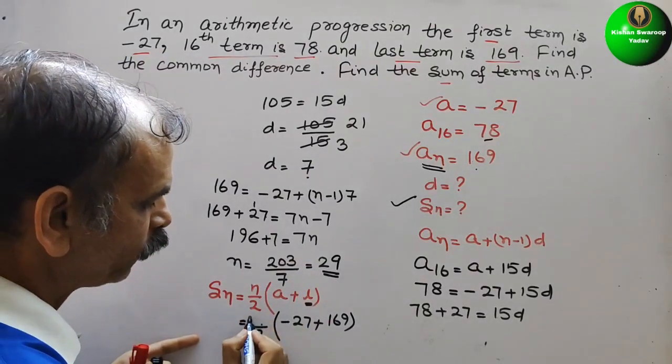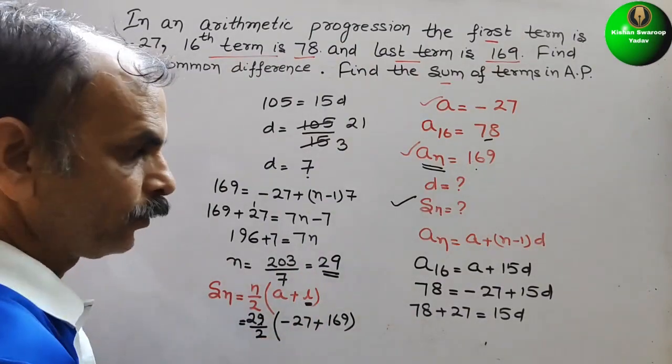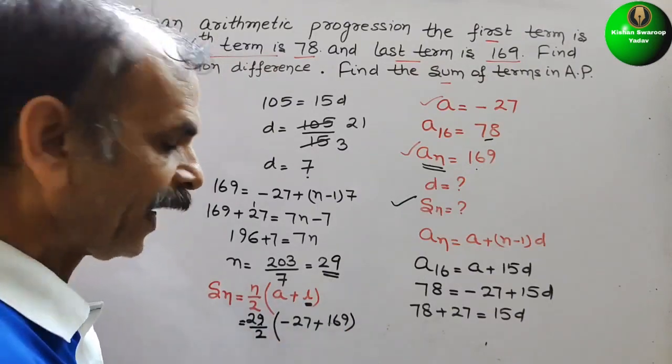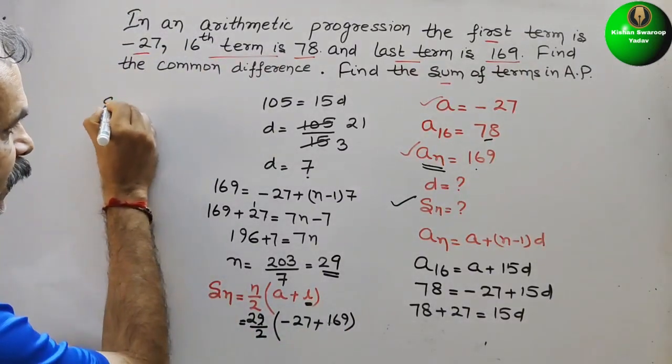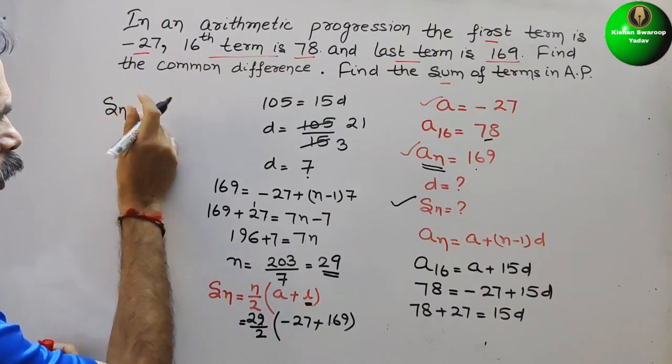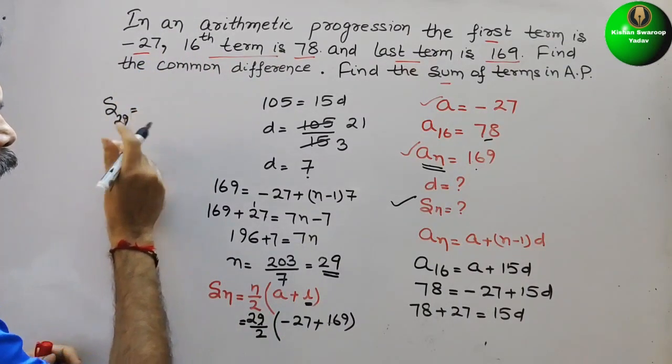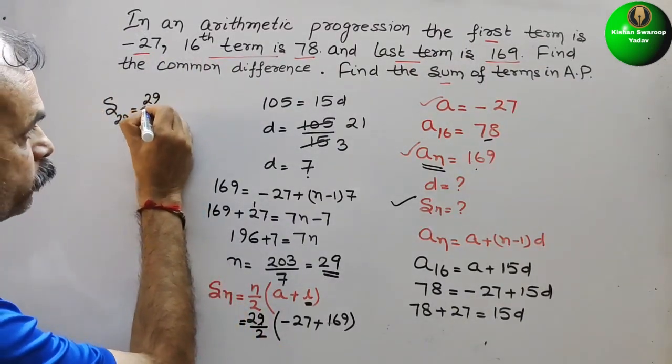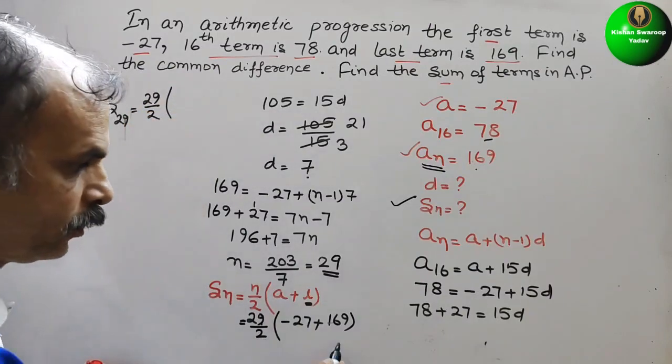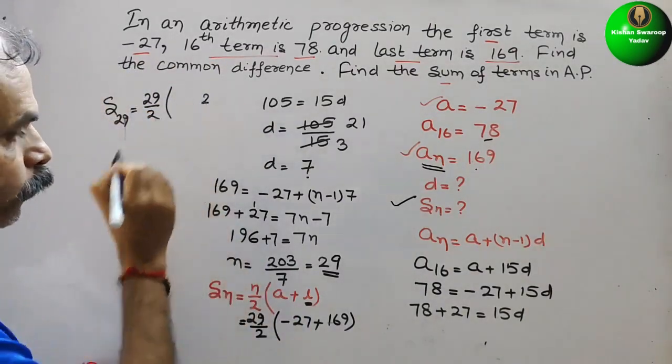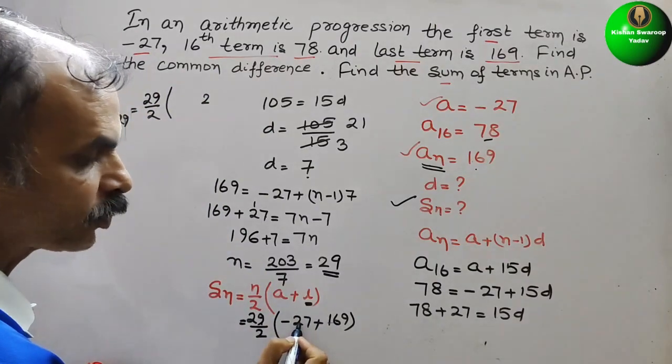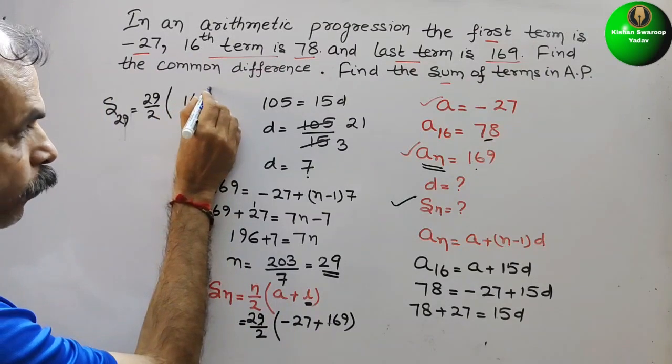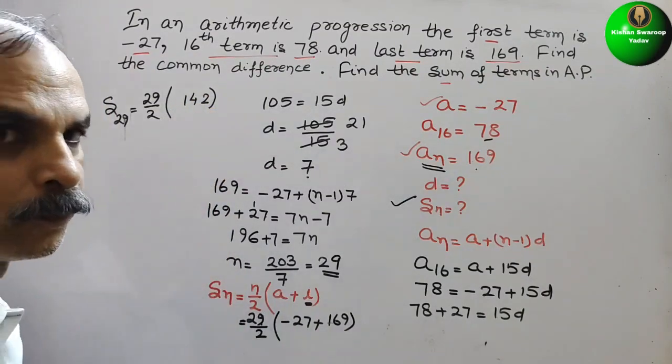So here comes 29. Now solve this. So here just subtract it. What we will get? S₂₉ equals 29 by 2. Now 9 minus 7 is 2, 6 minus 2 is 4. 142.